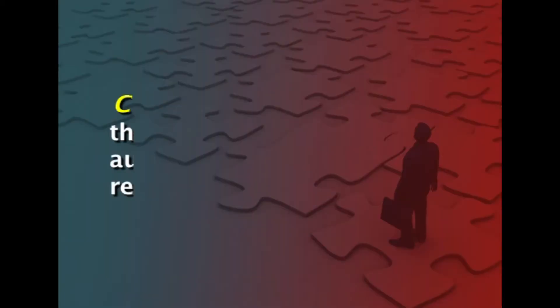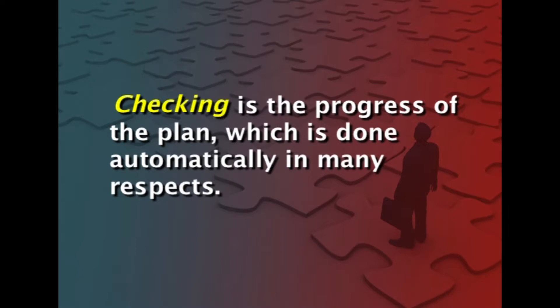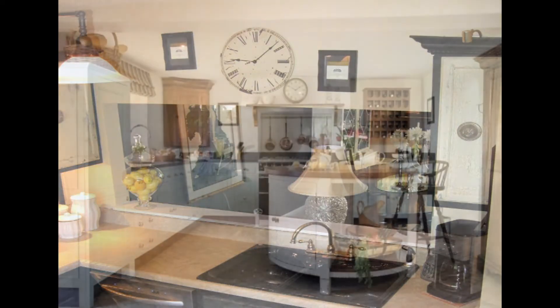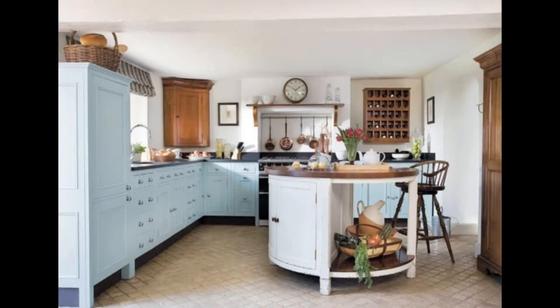A second phase of controlling is checking — monitoring the progress of the plan, which is done automatically in many respects. For example, nearly every home has a kitchen clock. It is necessary to have standards or intermediate goals at strategic points as a basis for checking. Devices to call attention for checking are needed; for example, a clock is a checking device.